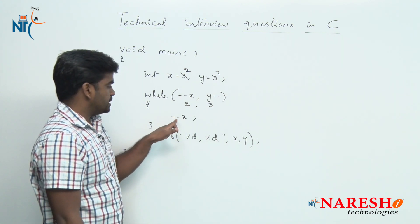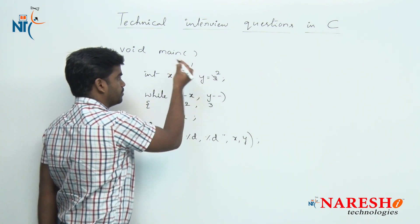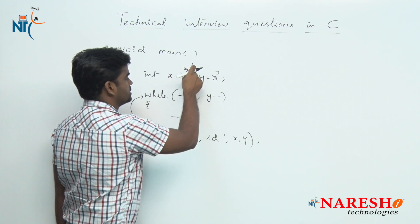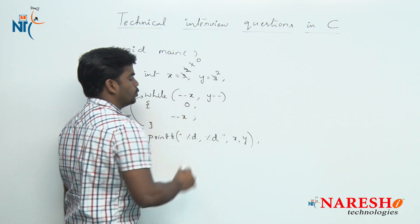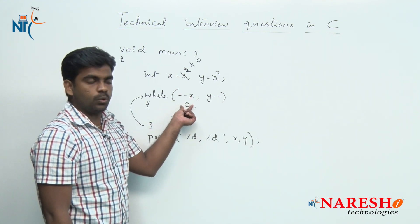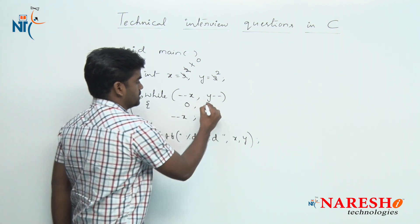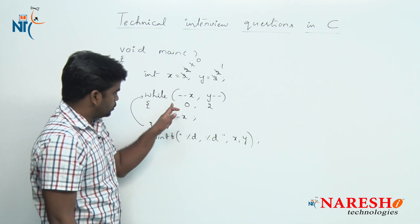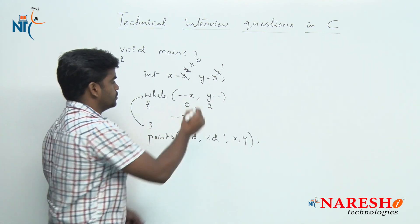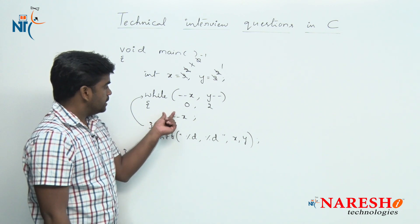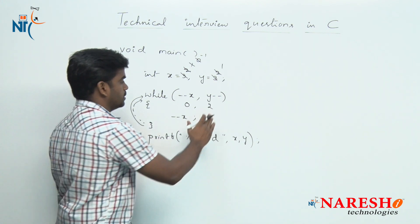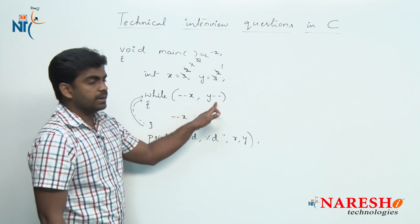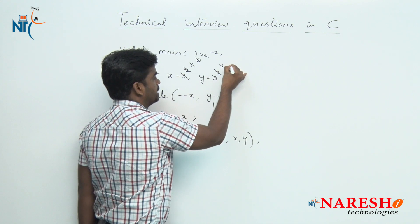Inside the loop, x value becomes 1. It repeats the loop — next, x value becomes 0, it substitutes but no use. It does not check that condition, only executes. For y, post-decrement substitutes value 2, but the value becomes 1, and the condition is true. Control moves inside again; x becomes -1. Repeating again, x becomes -2, and y post-decrement substitutes 1, value becomes 0.